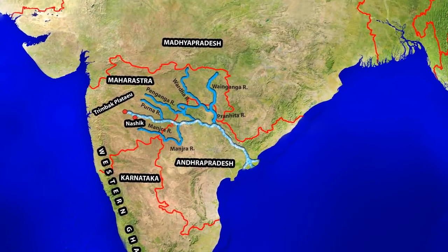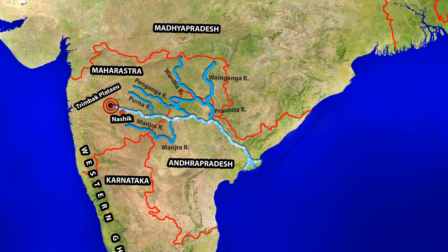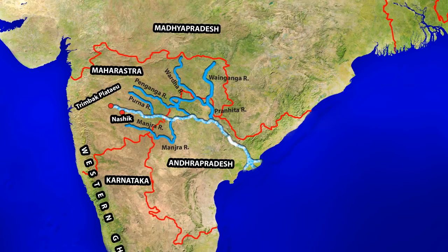The Godavari originates in the Trimbak Plateau near Nasik in Maharashtra. Its right bank tributary is Manjara and the left bank tributaries are Poon, Vardha, Pranhita, Venganga and Penganga rivers. Originating in the Western Ghats, it flows eastwards across the Deccan Plateau between the states of Maharashtra and Andhra Pradesh. It then crosses Andhra Pradesh, turns to flow in a south-east direction, and finally drains into the Bay of Bengal.